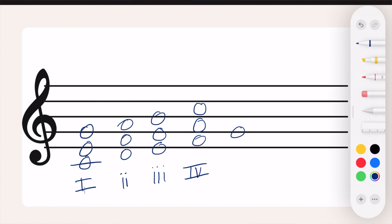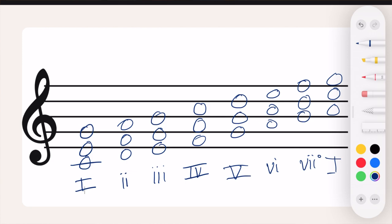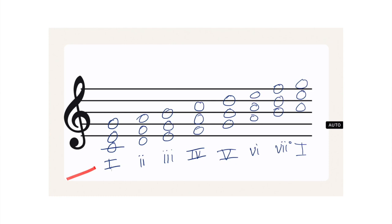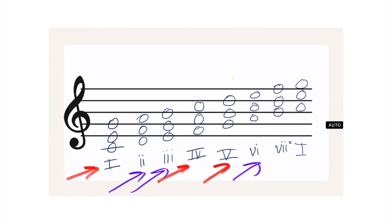I can do the same thing on G, A, B, and then again on C. I label these chords with Roman numerals — in Western classical music theory we use Roman numerals to show relation to the key. So in C major: C is the one chord, D is the two chord, E is the three chord, and so on. You'll notice some Roman numerals are uppercase — like I, IV, and V — while others are lowercase — like ii, vi, and iii. Uppercase means major; lowercase means minor.